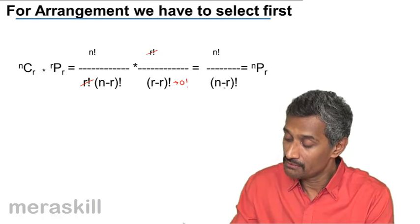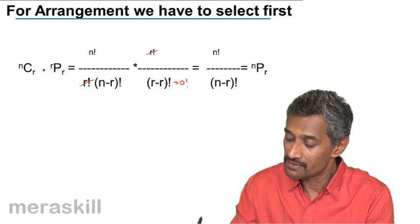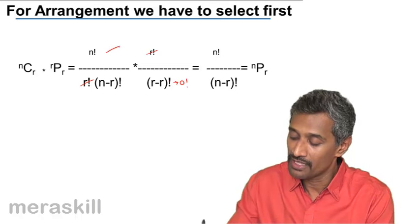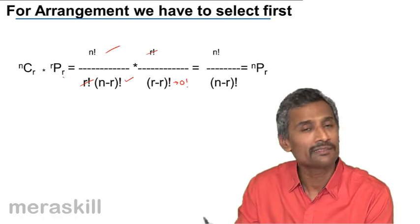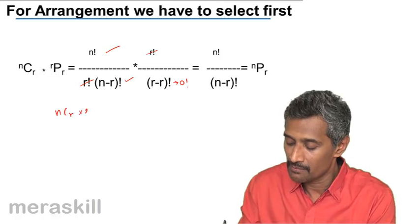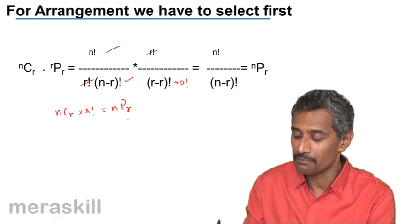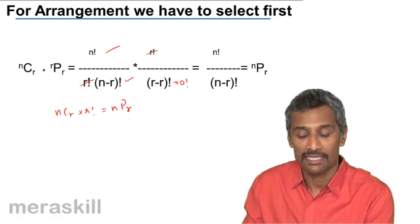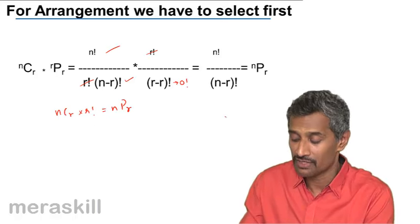And it's nothing but n factorial. This is the same as telling nCr into rPr is r factorial times nPr, which means that nPr upon r factorial is nCr, the formula that we derived earlier.